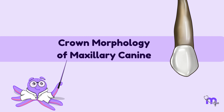Did you know that in constructing any four-walled building, four cornerstones exist at the base where two walls meet? These are no ordinary stones — they are large, strong, and bear the weight of the entire building. They are strategically placed at the most prominent location on the outside of the building. Similarly, our mouth also has four cornerstones: the canines.